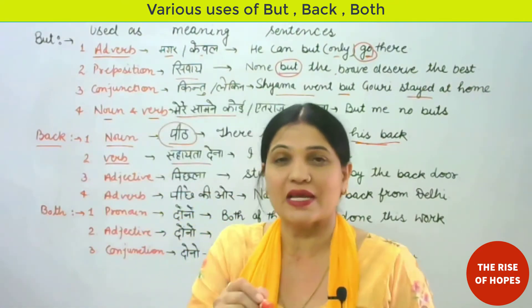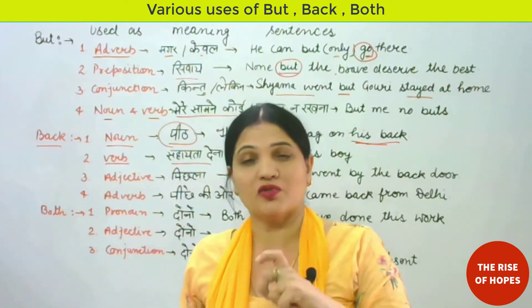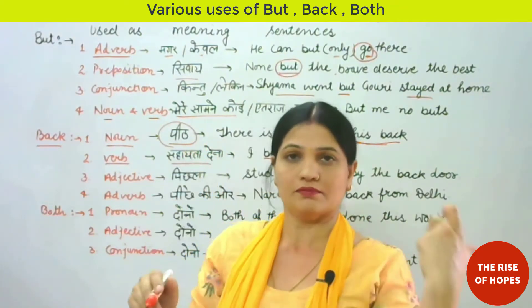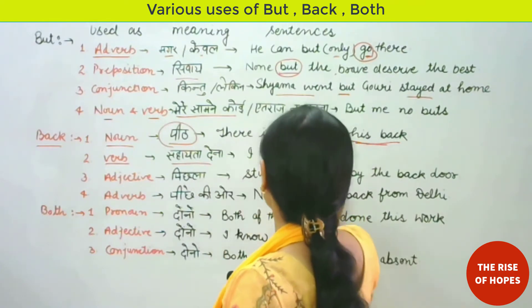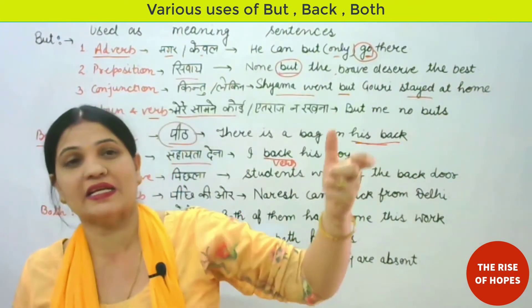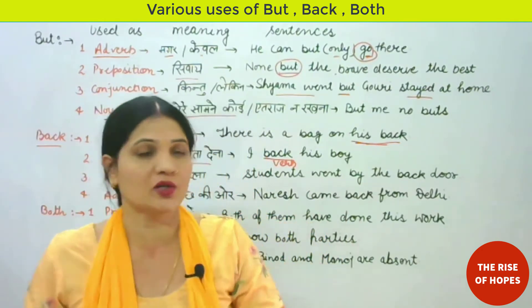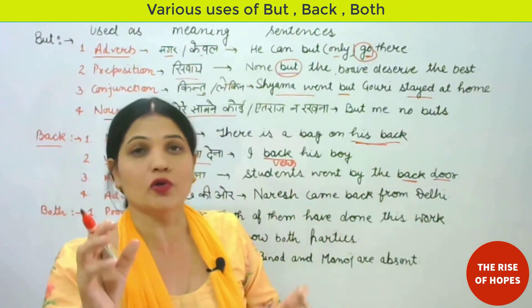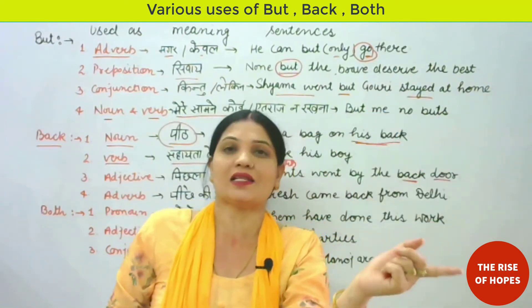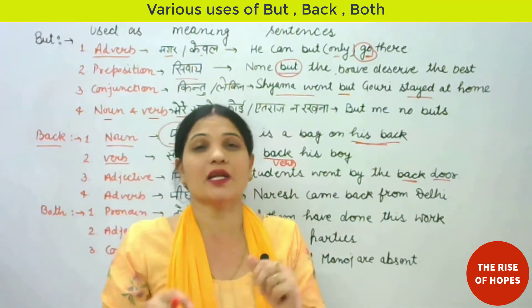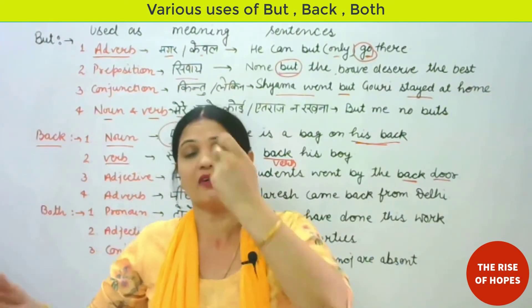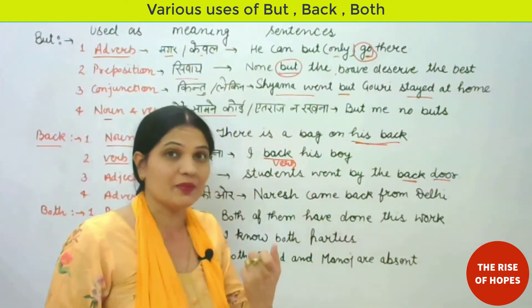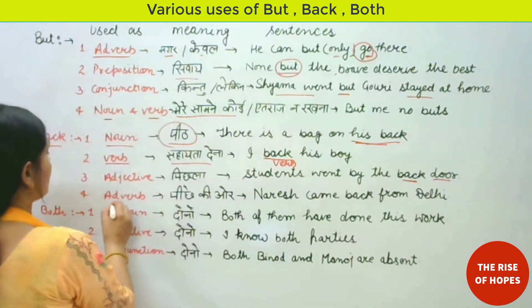Next, 'back' can be used as an adjective, which qualifies a noun or pronoun. Example: 'Students went by the back door.' Here 'back' is placed before the noun 'door' and tells us the quality of the door — which door? The back door, the rear door. So it is describing the quality of the noun 'door', functioning as an adjective.